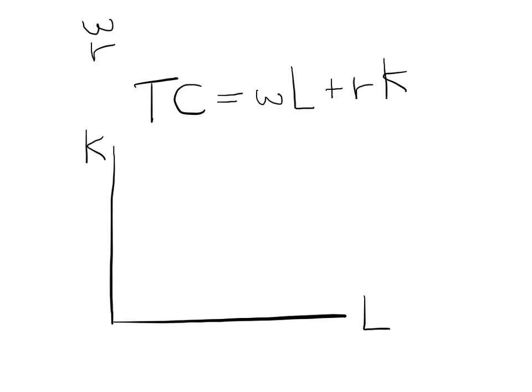Going back to the total cost function, we can represent this equation in the diagram by solving for K, which is the input on the vertical axis. Solving for K gives us K equals TC over R minus W over R times L.